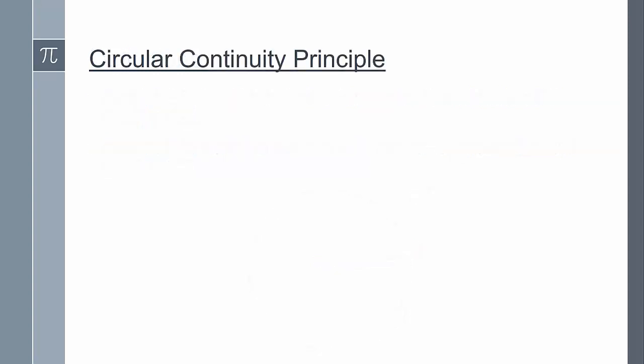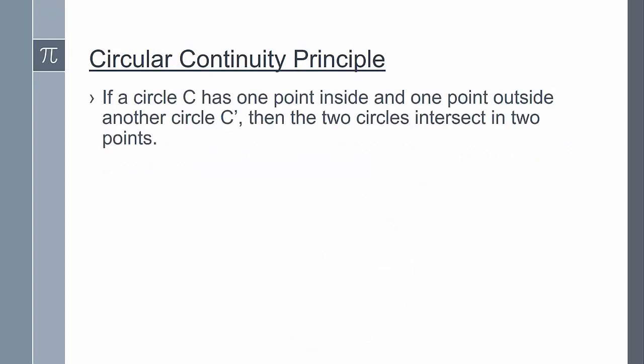Now let's state the circular continuity principle, which will be included in our continuity axioms. If a circle C has one point inside and one point outside another circle C prime, then the two circles intersect in two points. So this principle was needed to prove Euclid's first proposition. It's actually needed to prove Euclid's 22nd proposition as well.